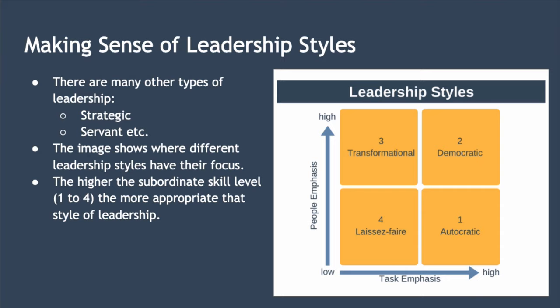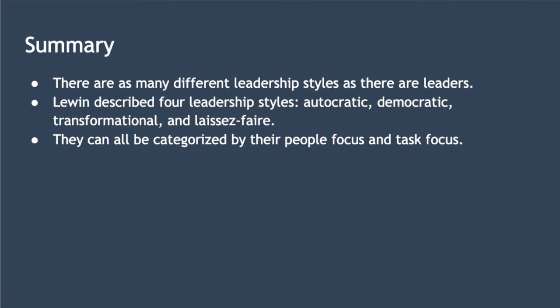Another point from this diagram is that the abilities of the leader — both soft skills and hard skills — must increase as you move from box one to four. Being an autocratic leader requires a much smaller set of skills and is less nuanced than being a laissez-faire leader. In summary, there are as many different leadership styles as there are leaders, but broadly they can be categorised according to people focus and task focus. Lewin described four leadership styles — autocratic, democratic, transformational, and laissez-faire — and the model described should help you understand and categorise any style of leadership you encounter.